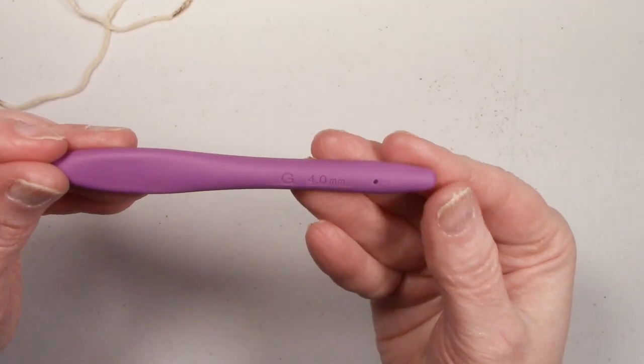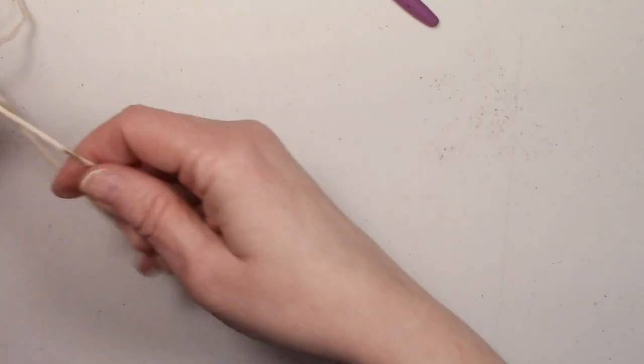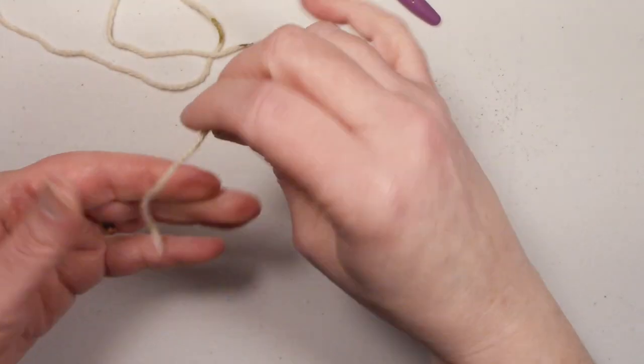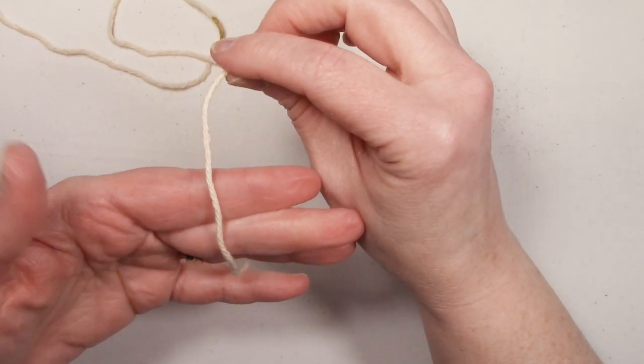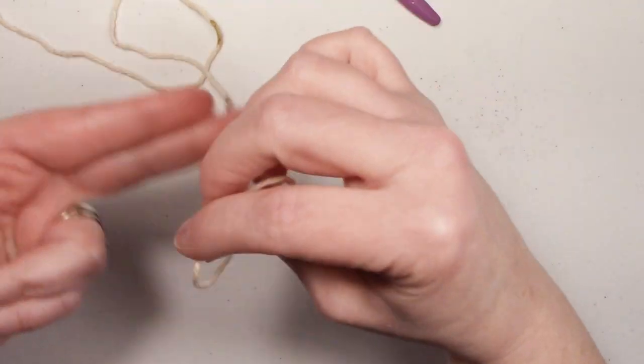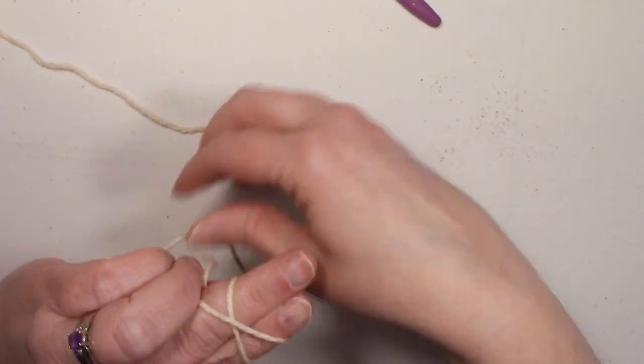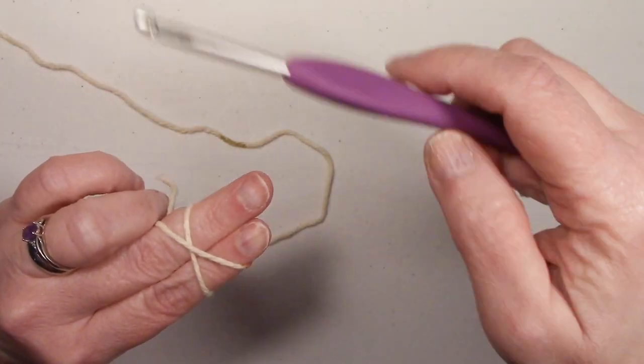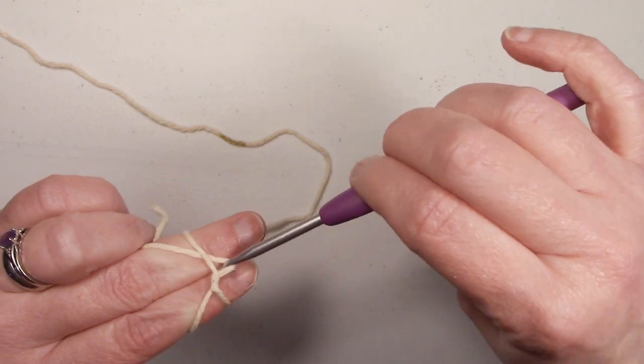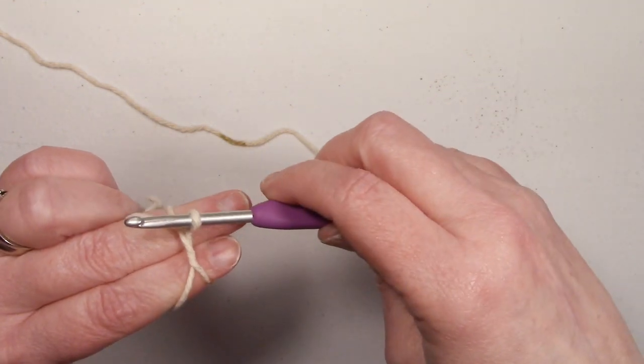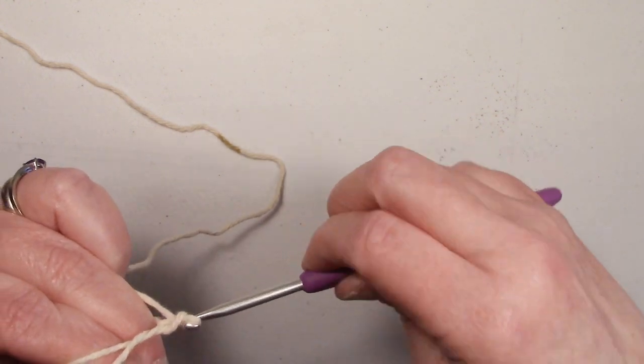In today's tutorial, I'll be using a 4.0 mm or G hook. To start our pot holder handle, we're going to use a magic ring. Place your yarn over your first two fingers and secure it with your thumb. Wrap it around and form an X on the back of your fingers. Place your hook underneath the bottom string, grab the top one, pull it over, and twist. Grab the top ring yarn again, and chain one.